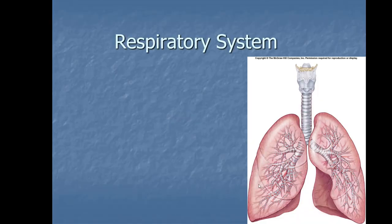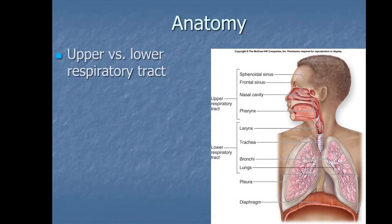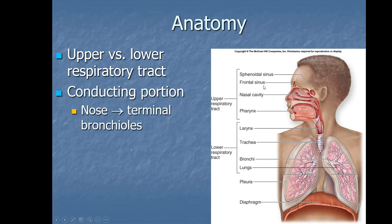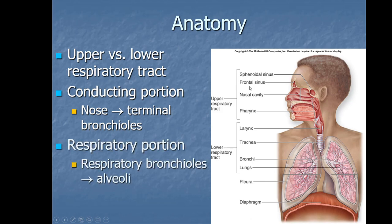This lecture is about the respiratory system. We have an upper and lower respiratory tract — everything from the nasal cavity down to the pharynx, including the oral cavity, is the upper respiratory tract. Anything below the larynx, where the vocal cords are, is the lower respiratory tract. We can further divide it into the conducting portion, which runs down to the terminal bronchioles and simply moves air, and the respiratory portion, where gas exchange takes place at alveoli and respiratory bronchioles.